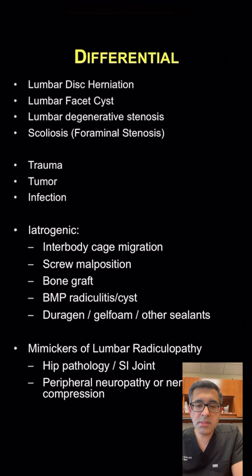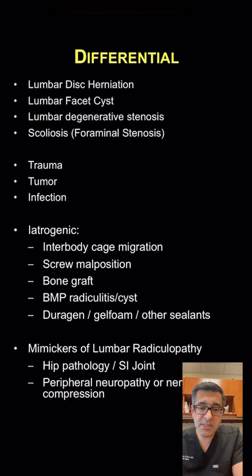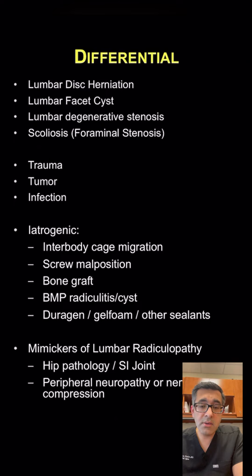What else can cause lumbar radiculopathy? Anything that pushes on a nerve in the lumbar spine can cause symptoms of radiculopathy. This can be from a disc herniation, which is what we're talking about today. It can be from a facet cyst that arises from the lumbar facets and pushes on the nerves. It can be due to degenerative stenosis or from scoliosis due to foraminal stenosis.